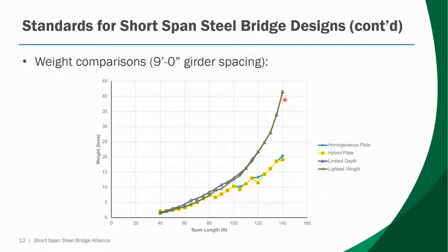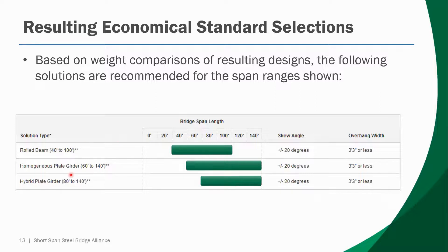What SSSBA decided is that it didn't make much sense to recommend rolled beams beyond a certain point. So if you run ESPAN with a span length past 100 feet, it will not generate a rolled beam solution — only a plate girder solution. Likewise on the short end, for 40 or 45-foot spans the weights are pretty much the same, so there's no need for a plate girder. Plate girders start at around 60 feet and rolled beams are cut off at 100 feet. Hybrid options are not reported until 80 feet.